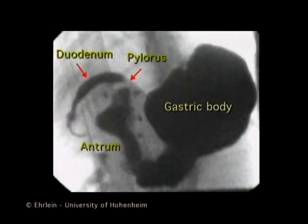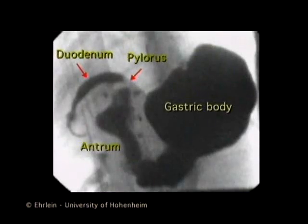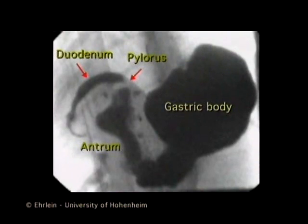Here you can see the fluoroscopic picture of the gastric body, the antrum, the pylorus and the duodenum.